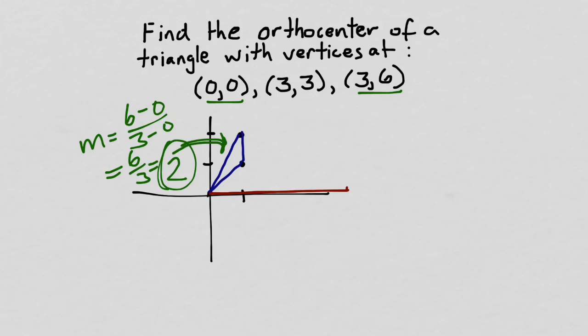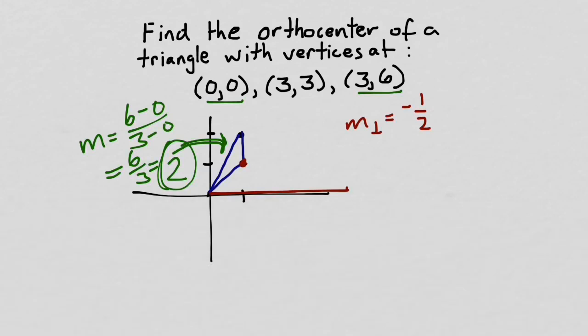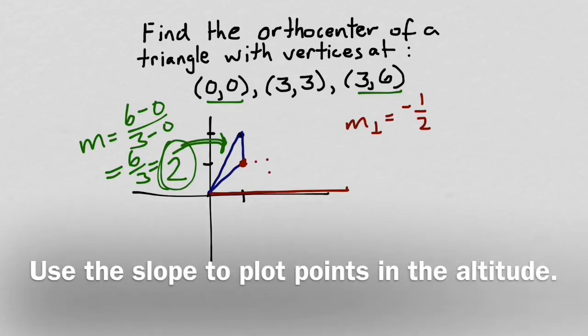And we want to find an altitude that's perpendicular to that. So the perpendicular slope is negative 1 half. And so thinking about what that looks like from this vertex, I want to go over 2 units and down 1. Over 2 units and down 1. And finally over 2 units and down 1.